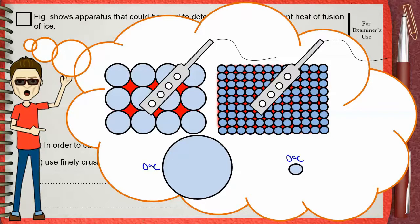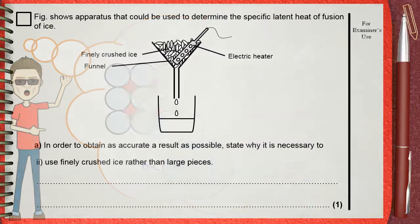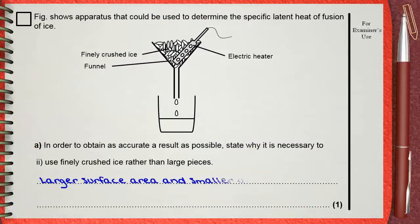Actually, its core may be less than zero, and this may cause an error in our experiment. We say larger surface area and smaller air gaps makes better contact between ice and heater.